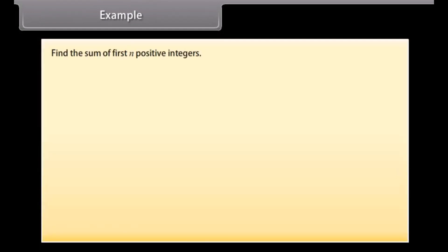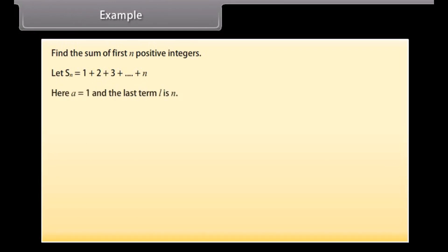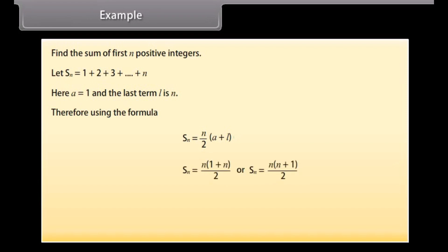Find the sum of the first N positive integers. Let SN equal 1 plus 2 plus 3 plus so on plus N. Here A equals 1 and the last term L equals N. Using the formula SN equals N upon 2 into (A plus L), we get SN equals N into (1 plus N) all upon 2, or SN equals N into (N plus 1) all upon 2. So the sum of first N positive integers is SN equals N(N plus 1) divided by 2.